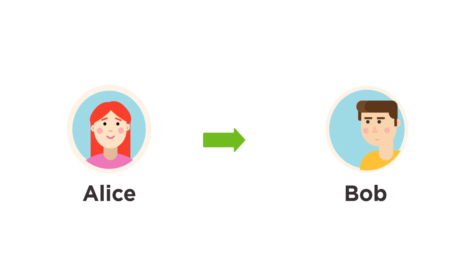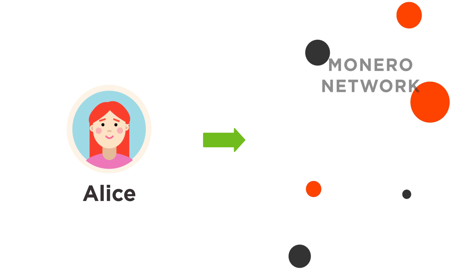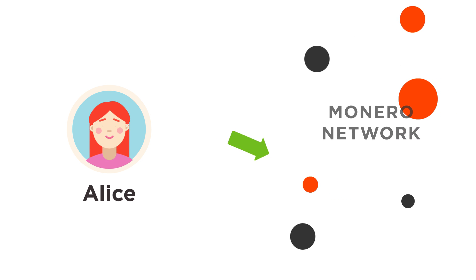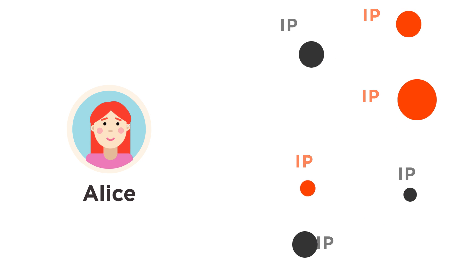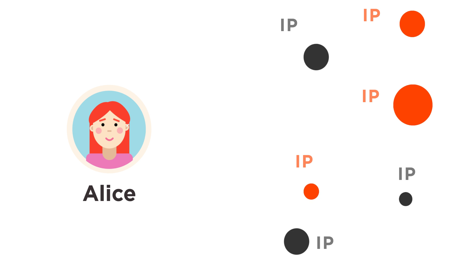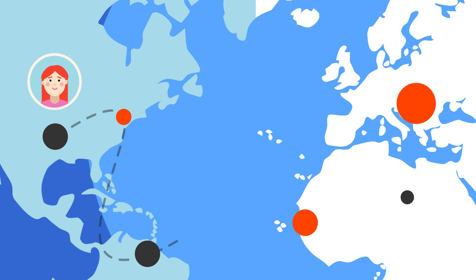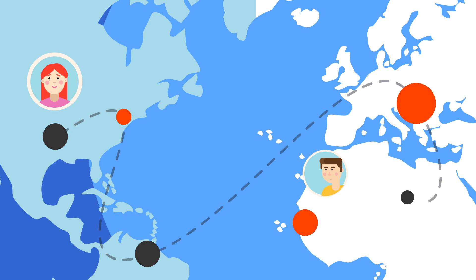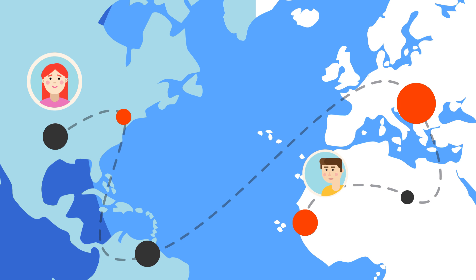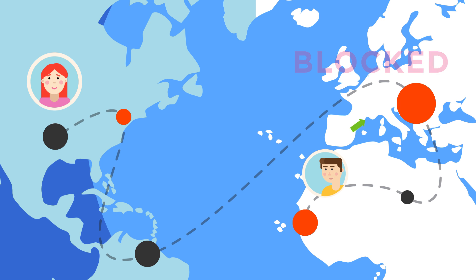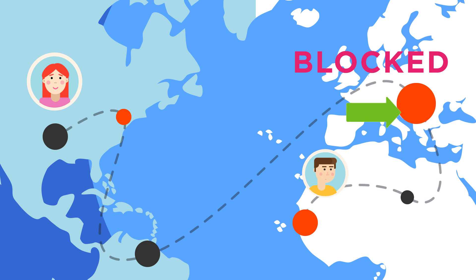Suppose Alice wants to send Monero to Bob. Alice's wallet creates a transaction and then broadcasts it to the Monero network. The Monero network is made up of nodes that communicate with each other by directing messages using IP addresses. This means that it might be possible to geographically trace data as it travels over the open Internet, from start to finish and everywhere in between. Even though the sender's and recipient's wallet addresses, as well as the amount of Monero sent, remain private, Alice is taking a risk in broadcasting her transaction as some nodes may be logging IP addresses.